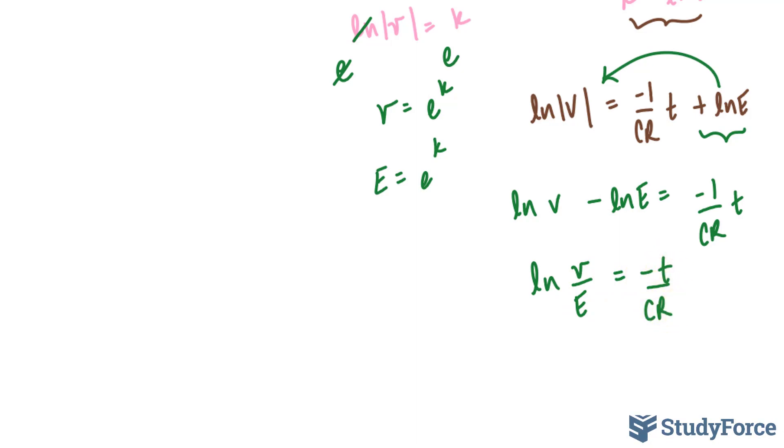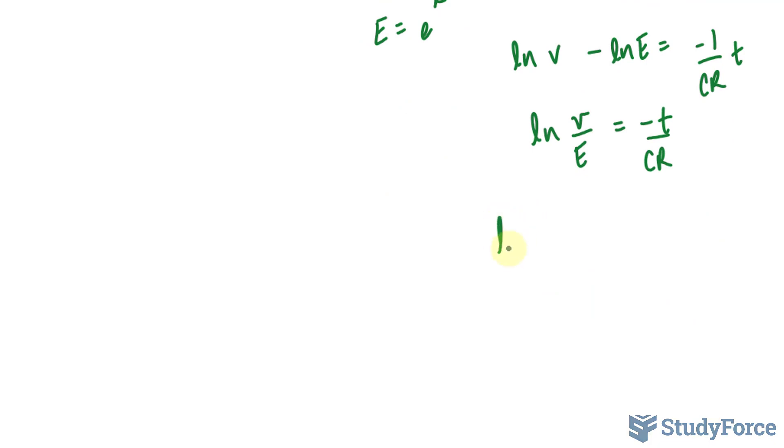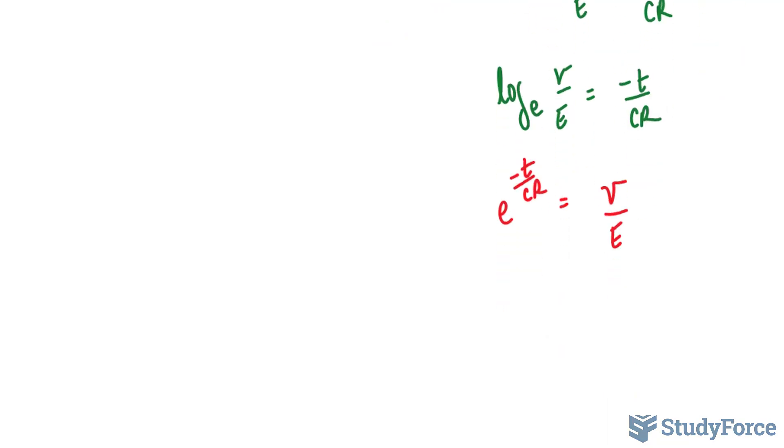And recall that ln is log E. Log E V over E is equal to negative T over CR. Changing this into exponential form where I have E to the power of negative T over CR is equal to V over big E. And this simplifies to the voltage across a discharging capacitor formula for this circuit, which is big E times little e to the power of negative T over CR is equal to little v.